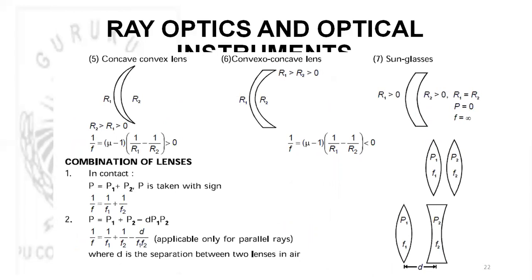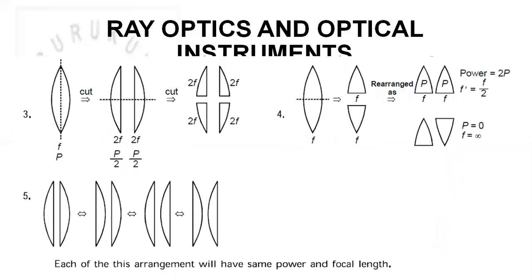For combination of lenses in contact: 1/F = 1/F1 + 1/F2 and P = P1 + P2, where power is positive for convex (converging) and negative for concave. If there is a separation d between two lenses, then P = P1 + P2 minus d * P1 * P2. This formula is applicable only for parallel rays.